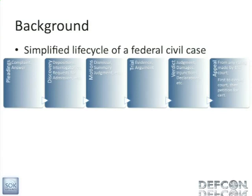Next, we're going to do some motions, trying to get evidence either included or excluded, and if we can manage it, summary judgment — which is basically, okay, everything the plaintiff says is true, but it doesn't really amount to a hill of beans, so get it out of here, dismiss the suit. Then assuming all that fails, we'll have to have a trial where we'll present evidence and hear arguments. You'll get a verdict that will include damages, injunctive relief, declaration, or something like that. Then whoever didn't like the judgment can appeal it.